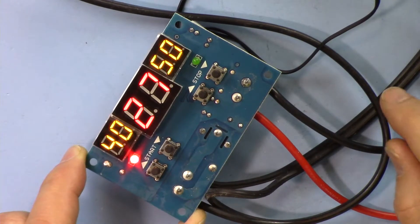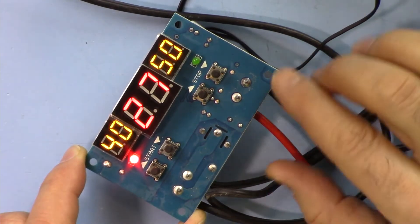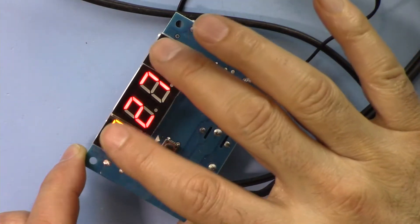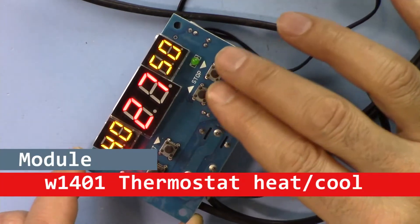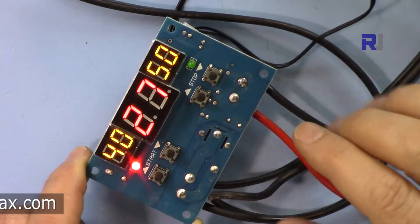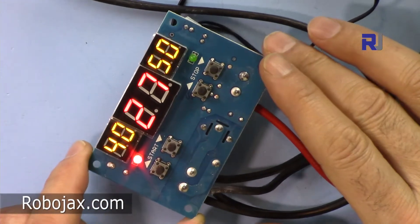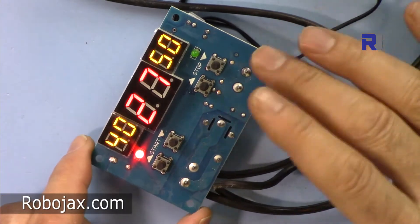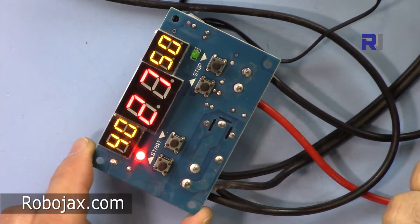Hi, welcome to ROBOJAX. In this video I'm going to show you how you can use this dual temperature control thermostat W1401. This is a device that can control heater and cooler in both ways. You can set this and it can control. So let's get started.